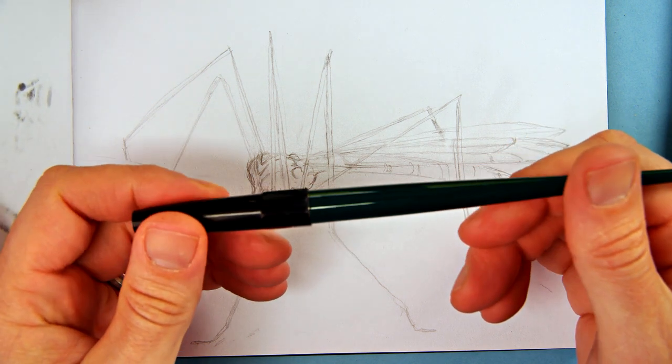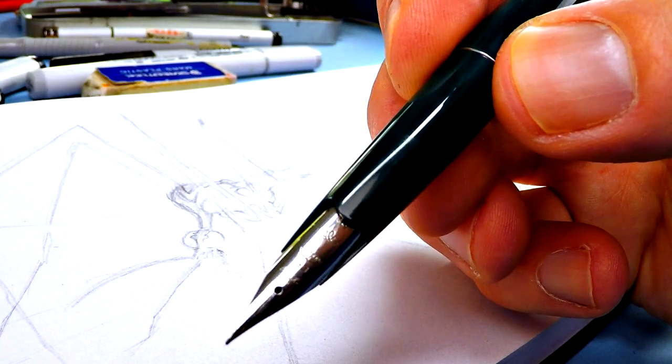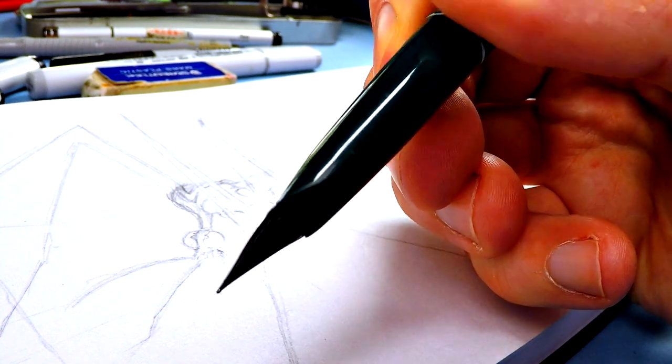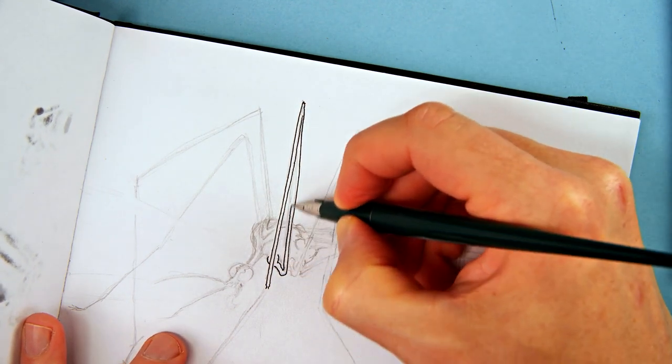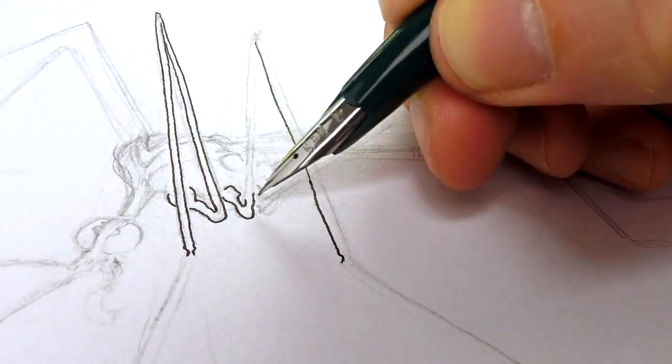This is the pen I used among others. This is the Japanese fountain pen with a really fine nib so it was good for this fine detail that this needed to get those thin legs.